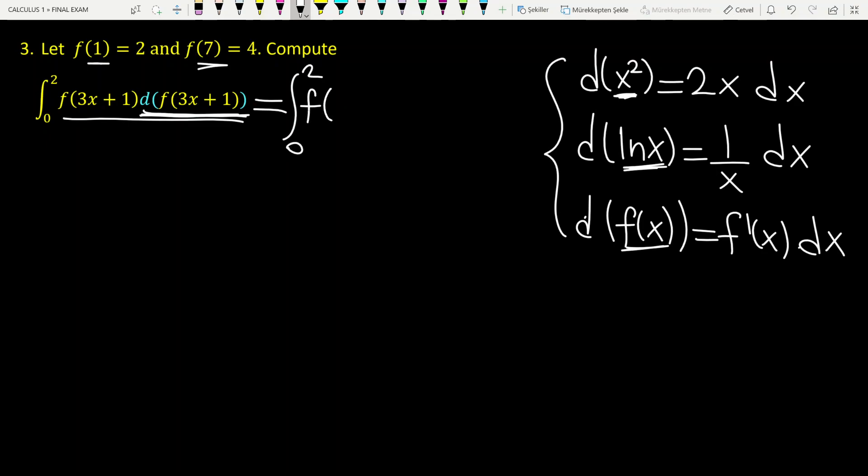From 0 to 2, f of 3x plus 1, times, instead of d of f of 3x plus 1, I first take derivative of 3x plus 1, which is 3. Then derivative of f, by chain rule of course. This is f prime of 3x plus 1, and finally, dx.